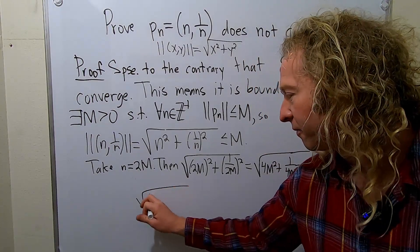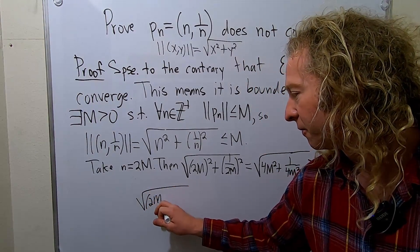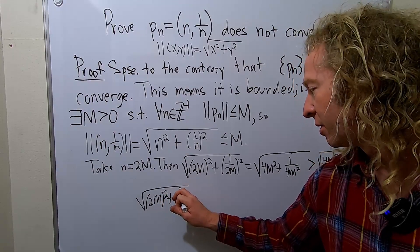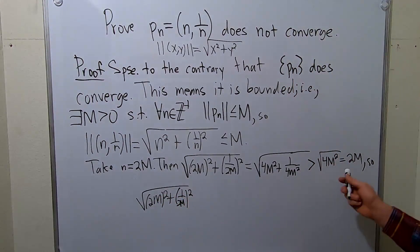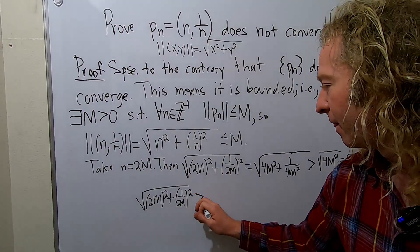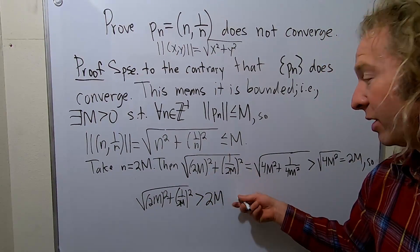So we have 2m squared plus 1 over 2m squared. And we said that's bigger than 2m. And that's bigger than m, right? 2 times m is bigger than m.